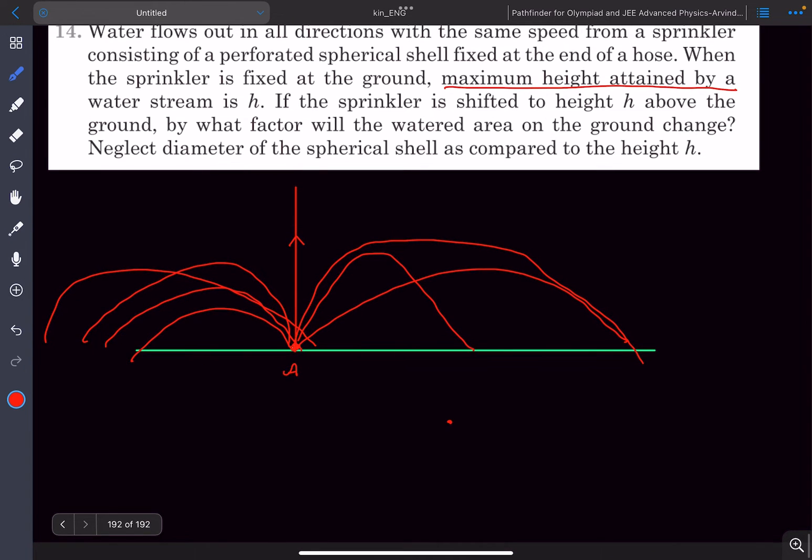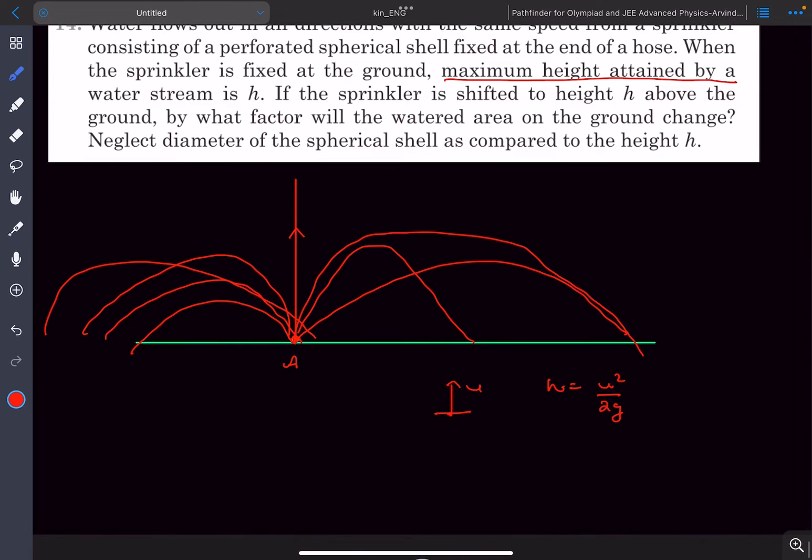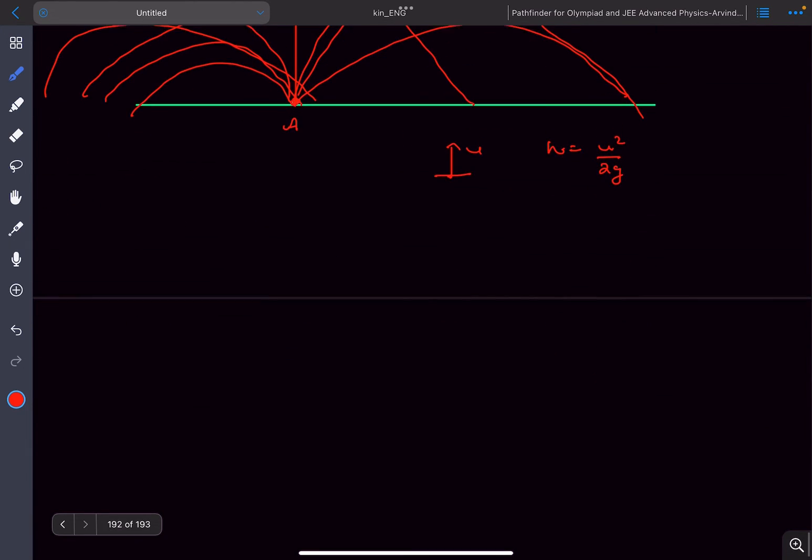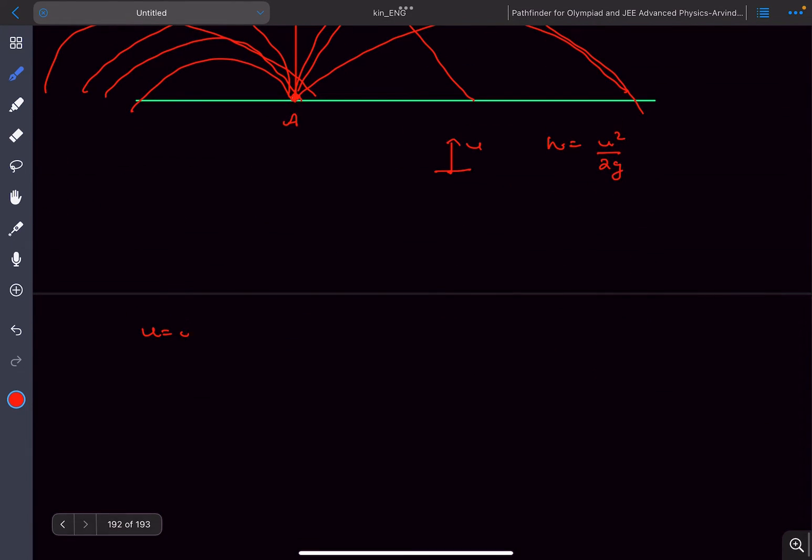A particle thrown up in the air with velocity u reaches a maximum height of u²/2g. So from here we can directly get the value of u to be √(2gh).